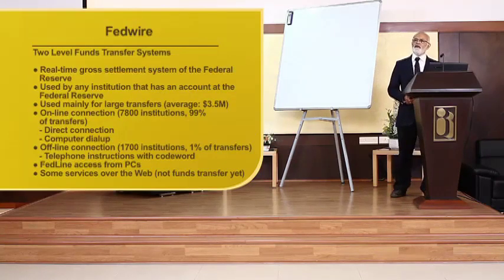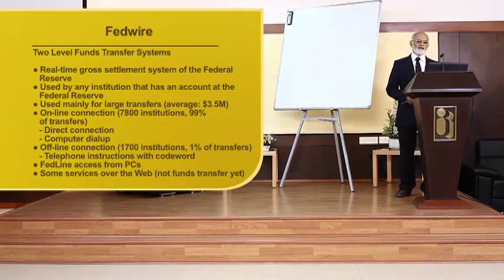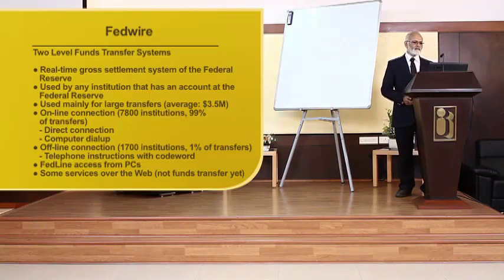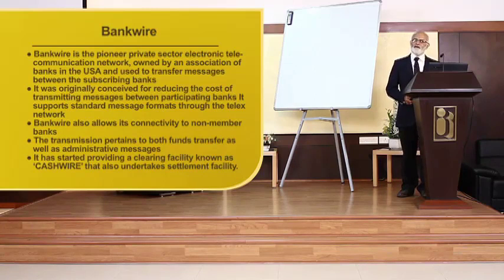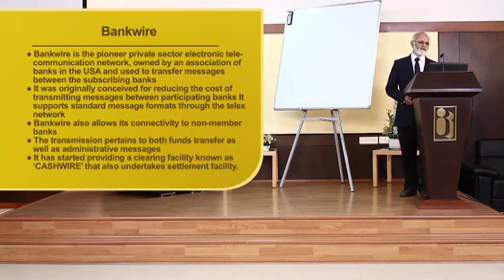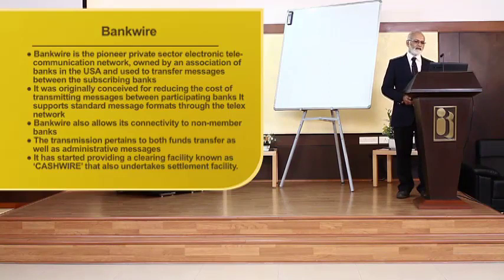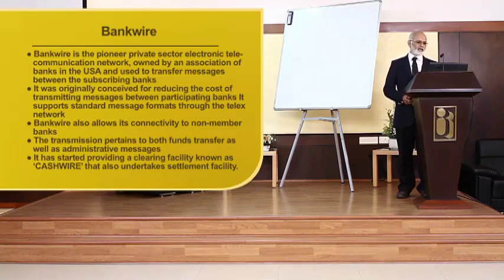Fedwire is an electronic funds transfer system — a two-level funds transfer system providing real-time gross settlement in the Federal Reserve of the US, used by any institution that has an account with the Federal Reserve, with both offline and online connections available. Bankwire is another way of transmitting EFT systems, serving as a pointer in private sector electronic communications for banks in the US, used to transfer messages between subscribing banks, originally conceived to reduce the cost of transmitting messages between participating banks, covering both funds transfer and administrative messages.